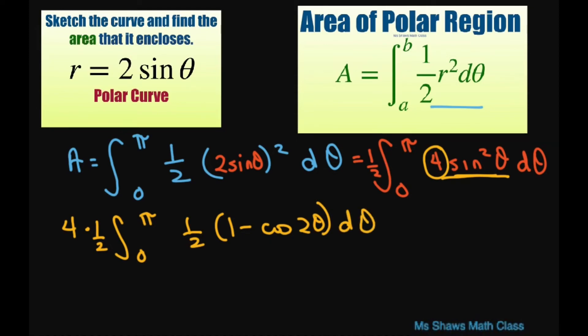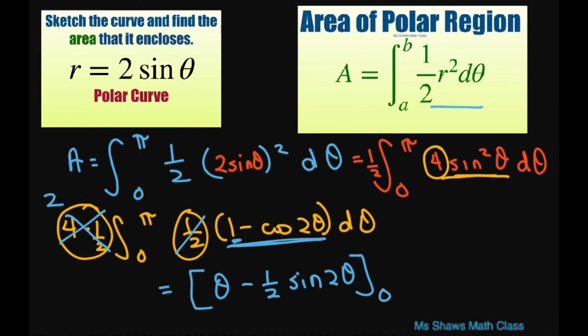Alright. So basically, this equals 2. You take half of 2. So that goes away. So basically, we're just integrating this piece. So that's going to equal... Let me write 2. 1 half of 2 is 1. So this all goes away. Get theta minus 1 half sine of 2 theta. And we're evaluating from 0 to pi.